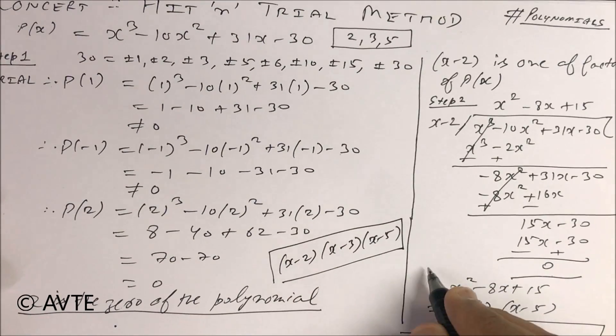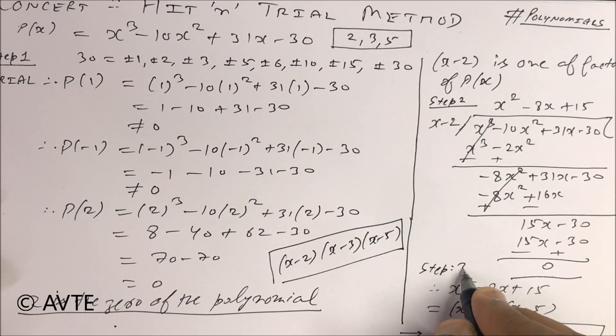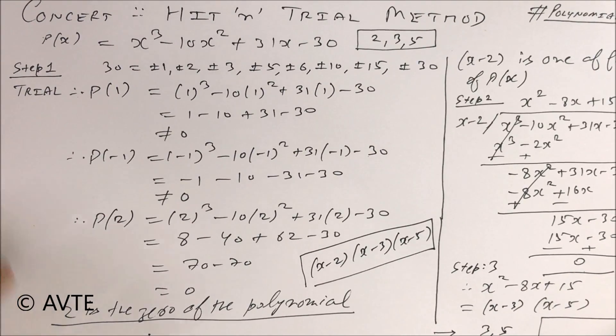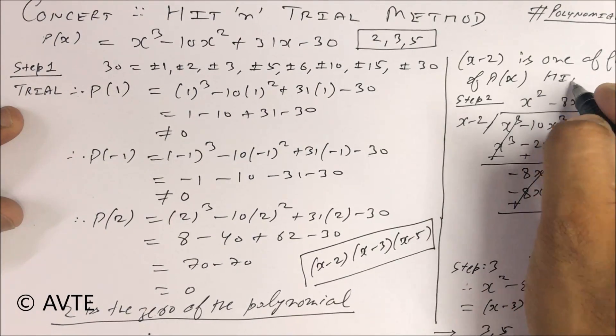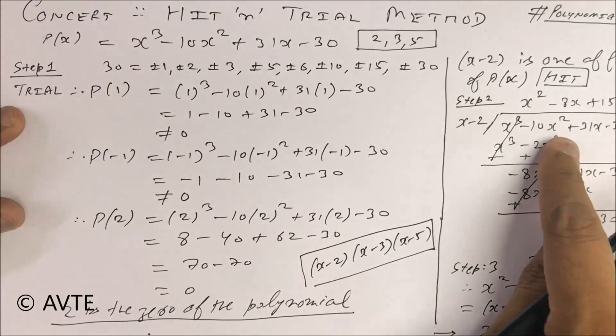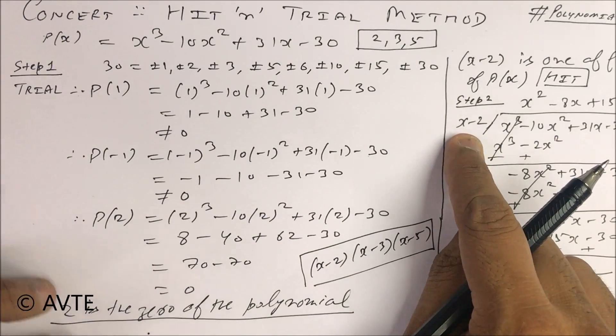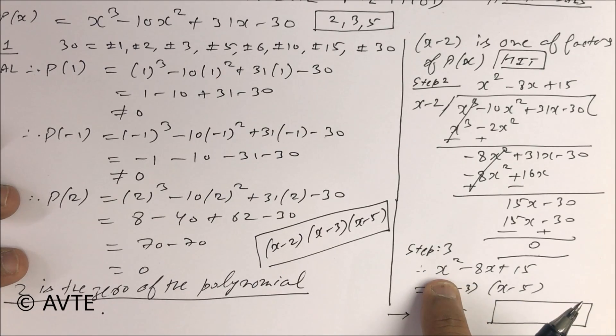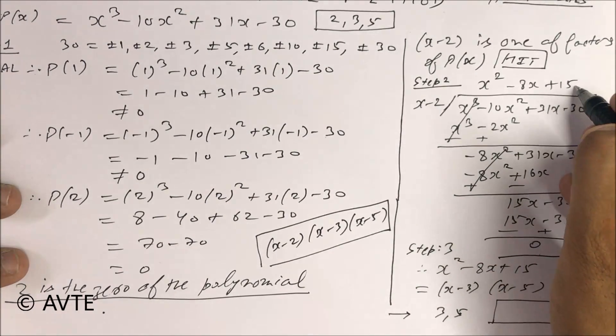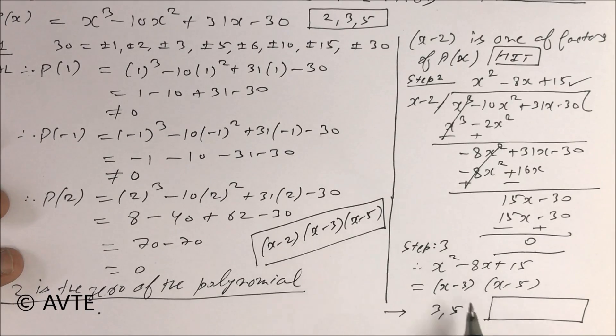Guys, this is your step 3. I just revised this concept. Step 1 is your trial method. Step 2 is your hit method, that means you are dividing the given polynomial with your first factor. And step 3, you have to make factors of the quotient. You got it. So these factors you can make with the help of middle term.